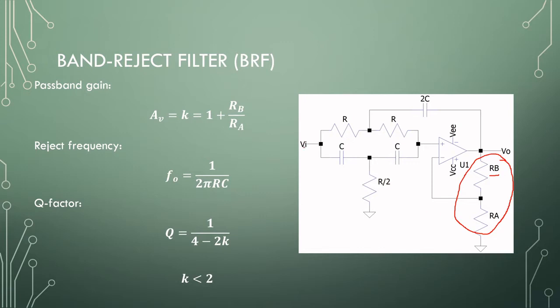Our output will be amplified a little bit, 1 plus RB over RA. As I said, RB is responsible, or can be tunable for our Q-factor, because K is the only variable featuring in our Q-factor. So, 1 over 4 minus 2 times K. Note that K must always be smaller than 2.